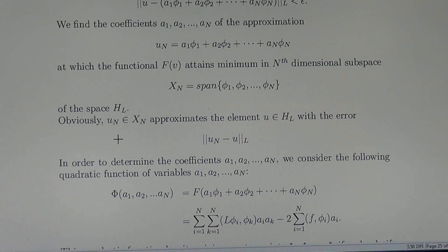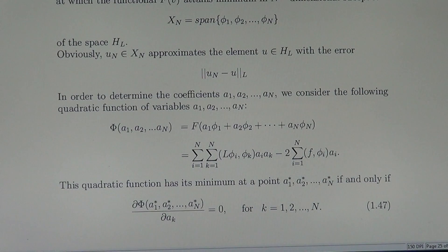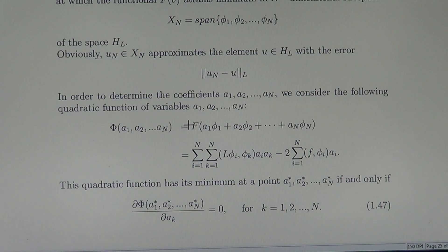Obviously, U_n belongs to X_n and approximates the element U in H_L with some error. In order to determine the coefficients A1, A2, ..., An, we consider the following quadratic function of the variables A1, A2, ..., An.